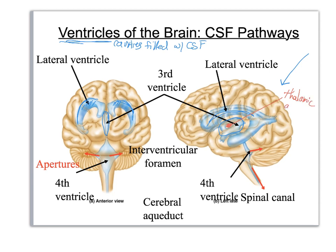Right here I've got a spot that's not blue — that is your thalamic adhesion, where the right and left lobes of the thalamus kiss. Then the third ventricle is going to empty into the structure here and go down into your fourth ventricle. We do have little interventricular foramina that go out to the sides. So it goes: lateral ventricle to third ventricle to cerebral aqueduct to fourth ventricle.